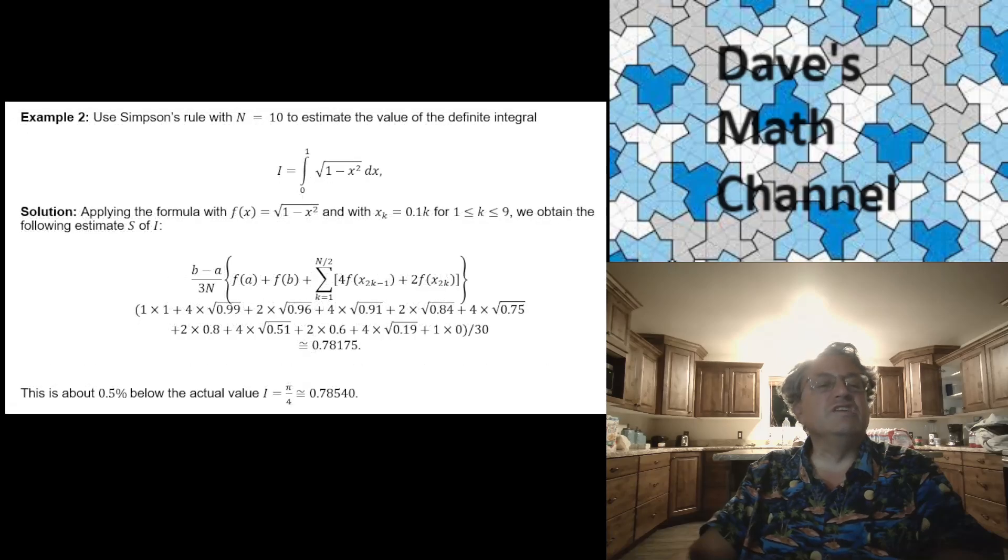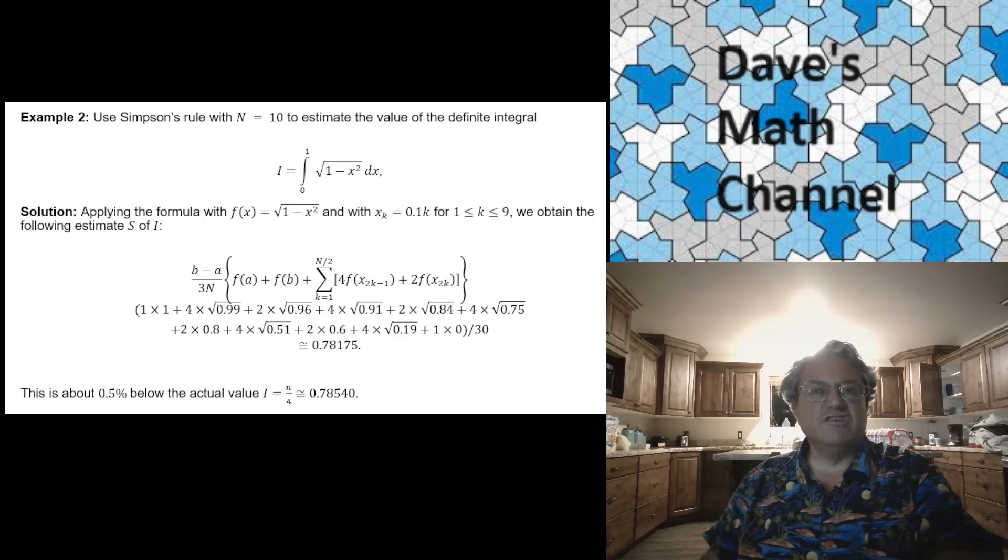Here's the other example I went over last time. Integral of square root of 1 minus x squared, x going from 0 to 1. And like I mentioned in the last video, this is a quarter of a unit circle, so we know what the right answer should be. It should be pi over 4. Let's see what Simpson's rule gives us for this example. If you plug everything in, you get kind of a mess. I'm not going to go through all the steps, but you can do it yourself. If you work this sum out, the answer you get, and I rounded it to five decimal places here, you get 0.78175. And it turns out that that's a very good approximation. It's only off by about a half a percent from the true value, which is pi over 4, which is approximately 0.78540.